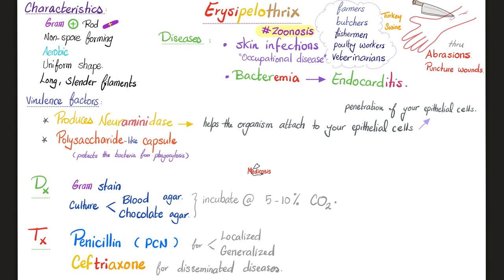Erysipelothrix can also lead to bacteremia, septicemia, and endocarditis. Virulence factors include neuraminidase, which helps Erysipelothrix attach to and penetrate your epithelial cells. It also has a polysaccharide-like capsule, which protects the bacteria from phagocytosis, as we have discussed in the mechanisms of evasion by which bacteria evade human immunity.